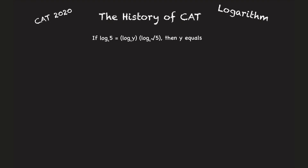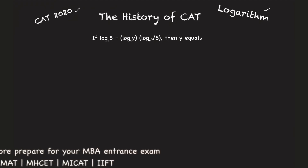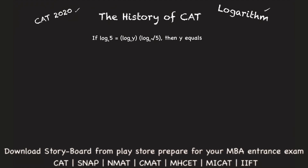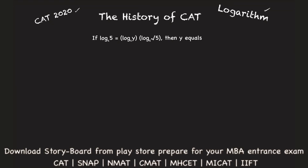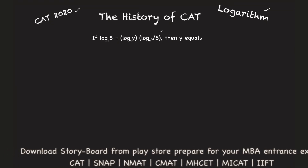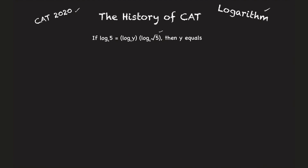Today we solve a problem which appeared in CAT 2020 from the chapter of logarithm. It is given that log to the base 4 of 5 equals log to the base 4 of y, multiplied by log to the base 6 of square root of 5. What is the value of y?